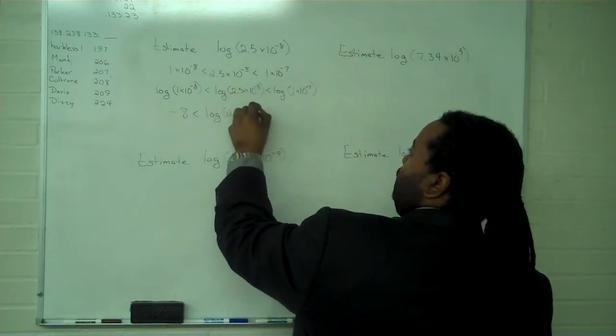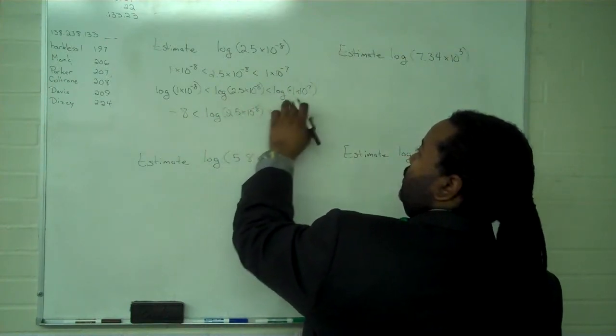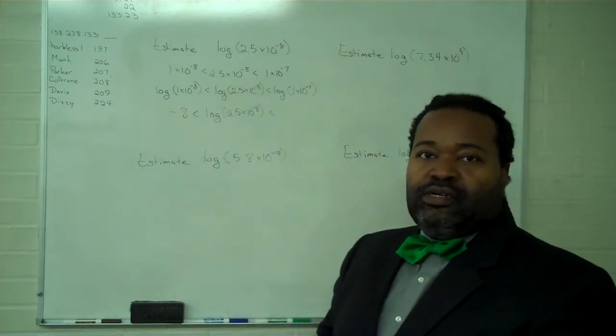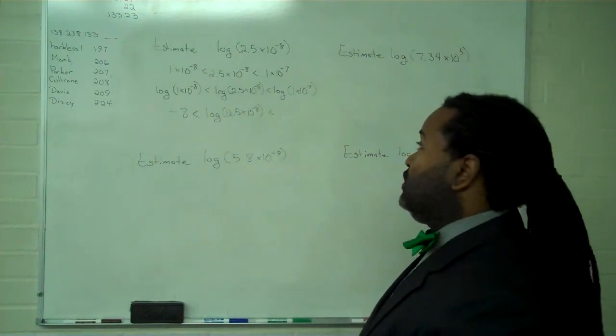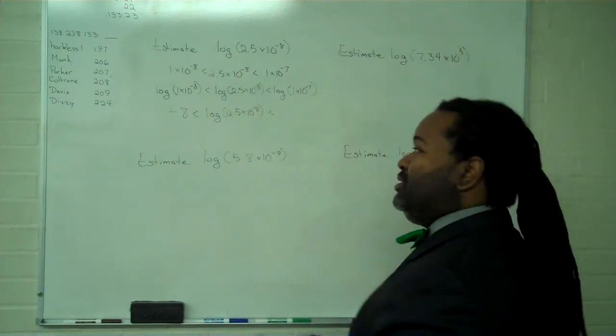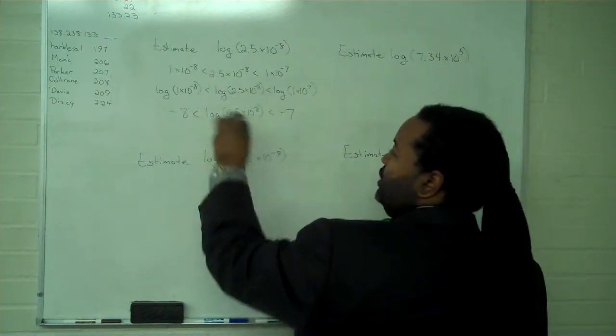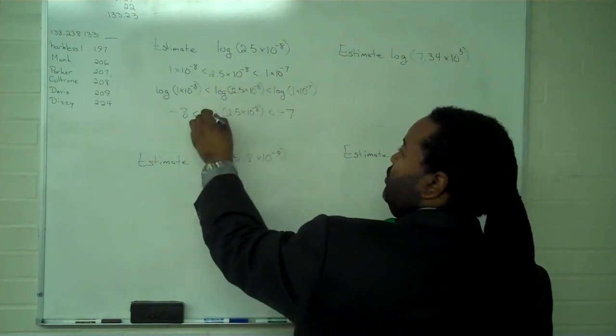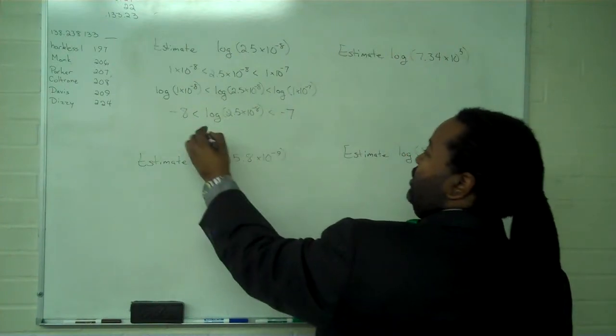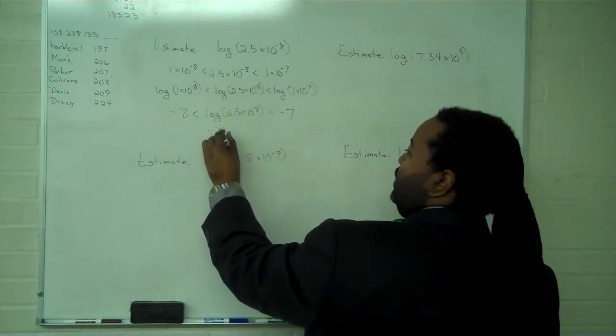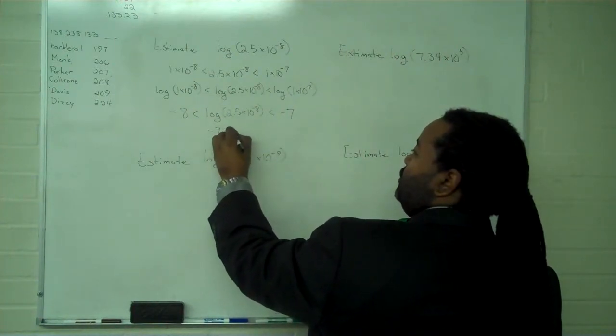We rewrite the unknown log that we're attempting to estimate. And the same thing applies here. Log of 1, which is 0, plus log of 10 to the negative 7, which is itself minus 7. So this means that this value is between negative 8 and negative 7, so we estimate it at negative 7 point something.